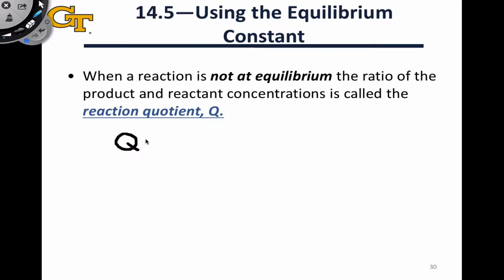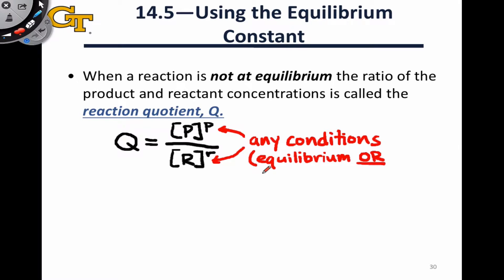Q mathematically has the exact same form as the equilibrium expression. It's still the ratio of product concentrations or pressures raised to their stoichiometric coefficients in the balanced chemical equation, divided by reactant concentrations raised to their respective stoichiometric coefficients. The only difference between Q and the equilibrium expression for K is that these concentrations are under any conditions, equilibrium or non-equilibrium conditions. Comparing Q to the value of K tells us the direction in which a reaction will spontaneously move.